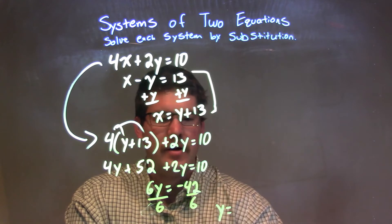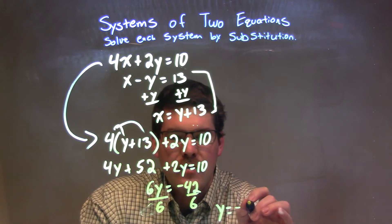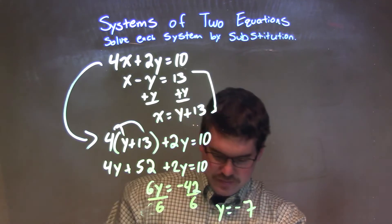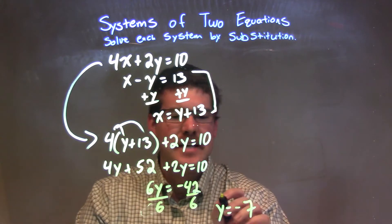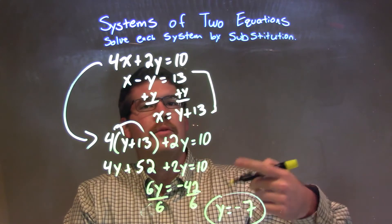Dividing by 6 gives me y by itself. 6 goes into 42 seven times, so we have y equals negative 7.